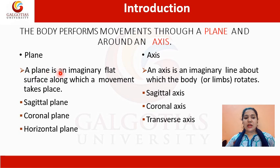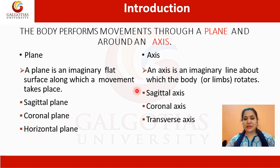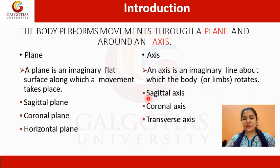Planes are flat surfaces and there are three types: the first is the sagittal plane, second is the coronal plane, and third is the horizontal plane. Whereas the axis is an imaginary line about which the body or limb rotates. It is also of three types: sagittal axis, coronal axis, and transverse axis.